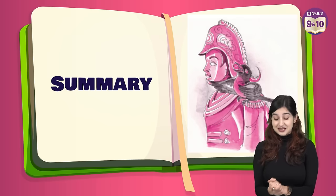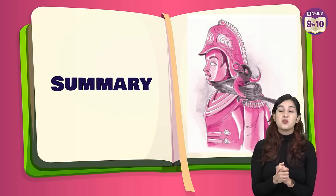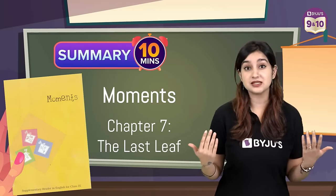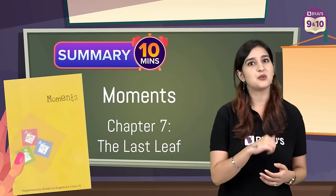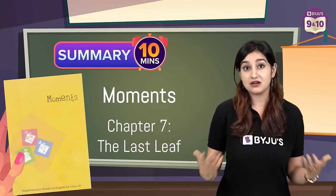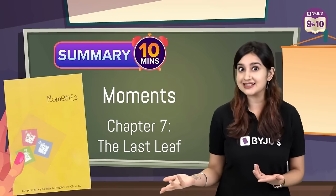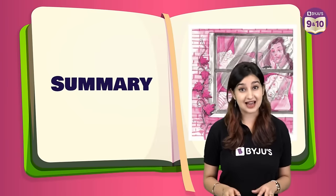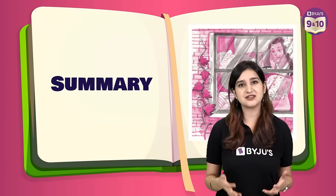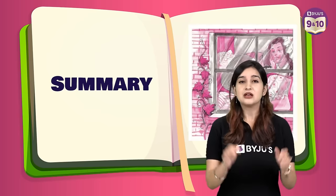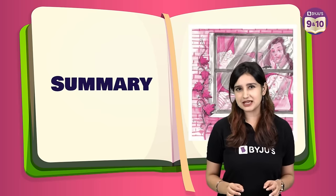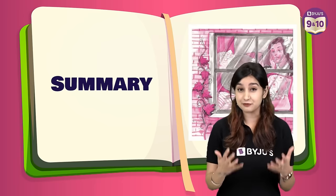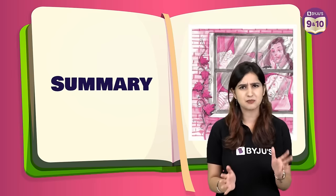That brings us to the end of this wonderful story. Today we will be going over Chapter 7 from Moments, which is The Last Leaf — a very beautiful story. The Last Leaf is a short story written by O. Henry. The story begins with Johnsy and Sue, who were young artists and friends living together in a small flat.